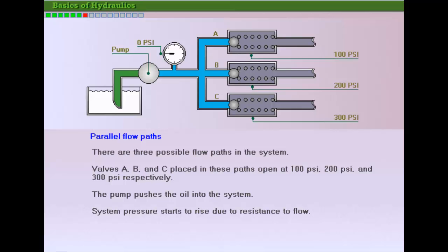Consider three possible flow paths through valves A, B, and C. For these paths, let's see how oil flows through the valves set at different pressures. In this system, check valves A, B, and C are set at pressures of 100, 200, and 300 psi, respectively.